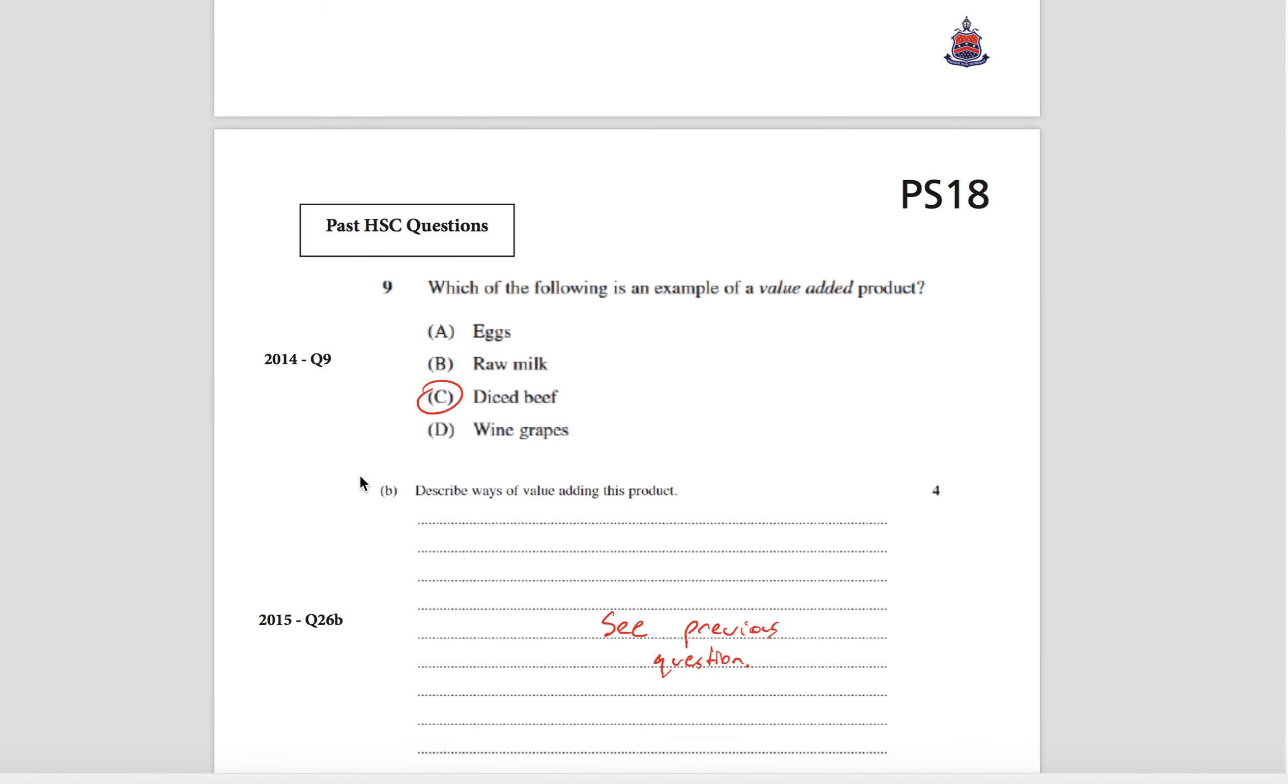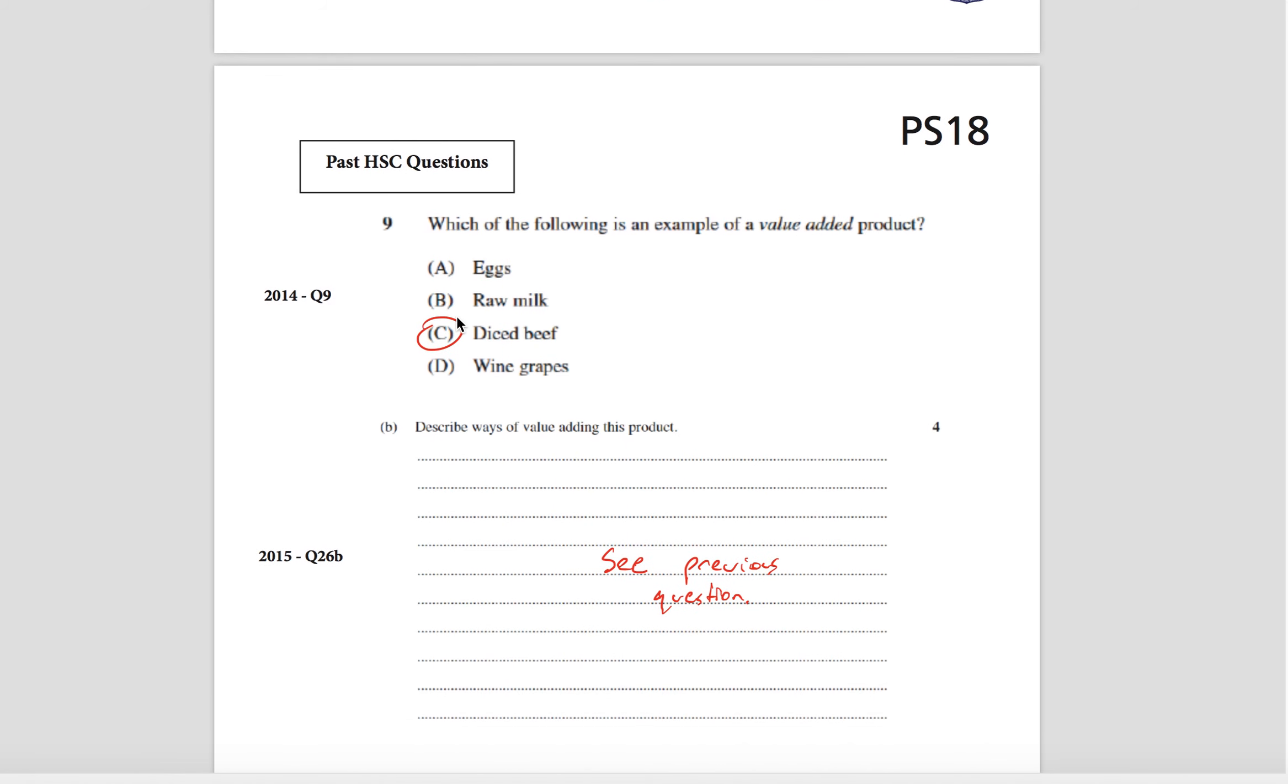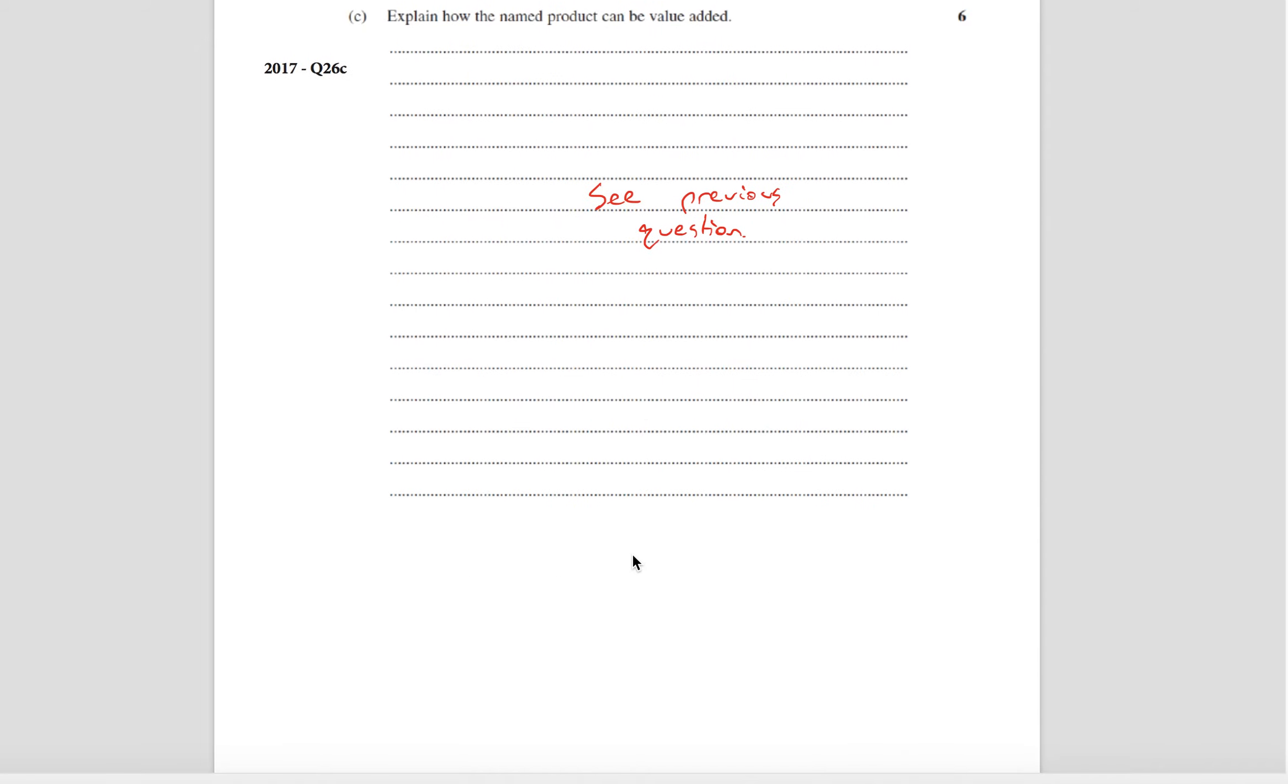This one here is another question: which of the following is an example of value-added products? Eggs is raw, raw milk is obviously raw, diced beef has had something done to it—it's been diced—and wine grapes haven't been made into wine yet, they're wine grapes so nothing's been done with it. Makes it a bit tricky, but diced beef has been diced so that is the example there of value-adding. And that is how to answer those questions.